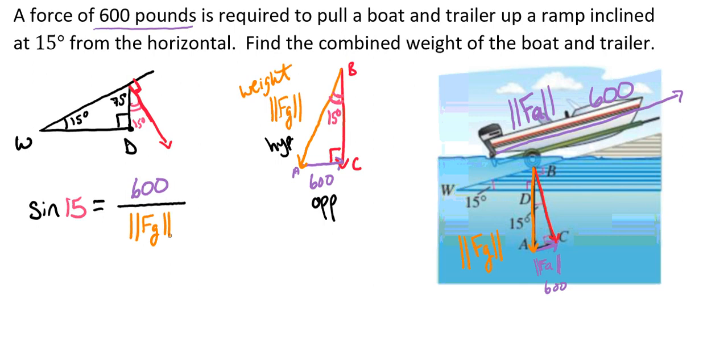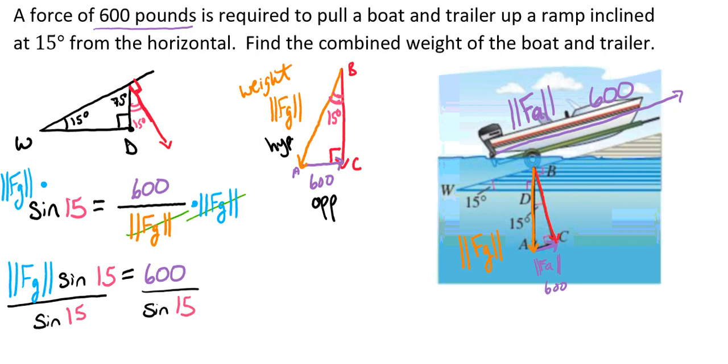If we're trying to solve this by itself, we're going to need to multiply both sides by the magnitude of the force of gravity, and then divide by sine. So we multiply both sides by the force of gravity, which allows us to eliminate the force of gravity on that side or the weight on that side. And from there, we'll divide both sides by the sine of 15, so that way we're able to get the magnitude of the force of gravity by itself.